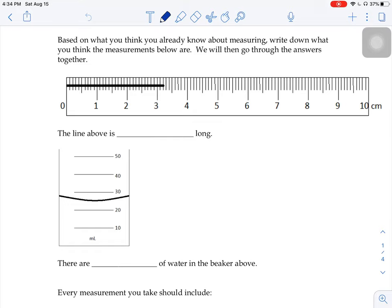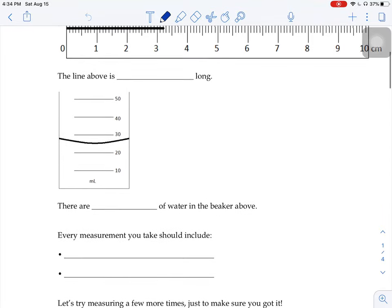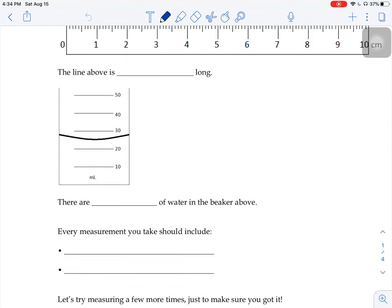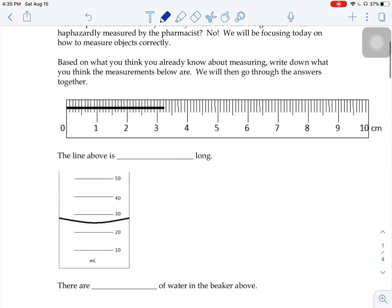Welcome back. Okay, so now what we're going to do is figure out how you're supposed to properly measure. So I'm going to go down here for just a second, where it says every measurement you take should include. I'm going to fill that in, and then we'll go up above and measure those two objects using these rules. Every measurement you take should include one guest digit, and every measurement should also include a unit. So let's take those two ideas of one guest digit and a unit, and we'll go to this first one where it says, the line is, how long is this line?